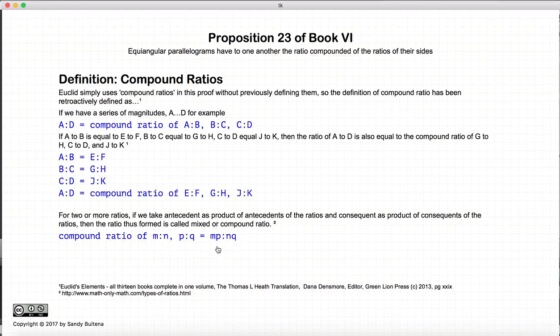So carrying this further, let's describe it more precisely. The compound ratio of A to D is A times B times C, compared to B times C times D. Or since these all hold, the compound ratio of A to D is also the compound ratio of E to K, which is E times G times J, compared to F times H times K. So this is the definition of the compound ratio.